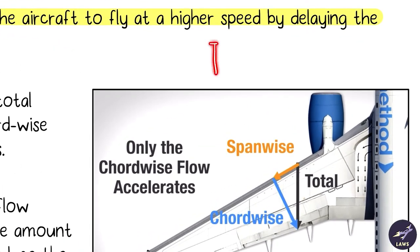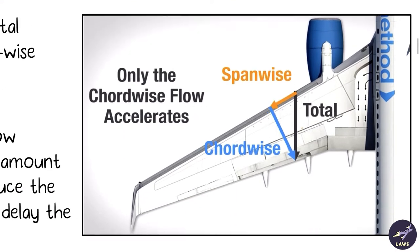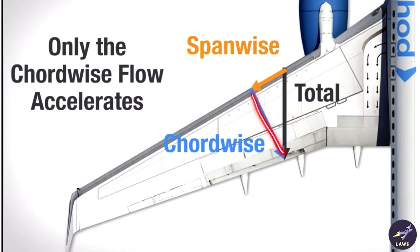In a rectangular wing there is only chordwise flow along the chord line — no spanwise flow. In a swept-back wing, the total flow is divided into spanwise flow, which stacks up towards the tips, and chordwise flow along the chord line. For example, if total flow is 10 knots, 3 knots would be spanwise and 7 would be chordwise.